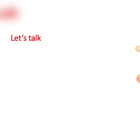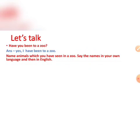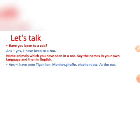Let's talk. Have you been to a zoo? Answer: Yes, I have been to a zoo. Name animals which you have seen in a zoo — say the names in your own language and then in English. Answer: I have seen tiger, lion, monkey, giraffe, elephant, etc. at the zoo.